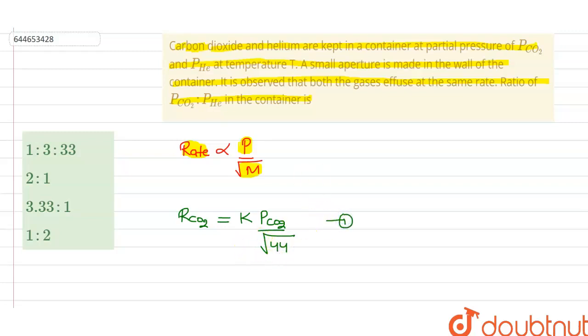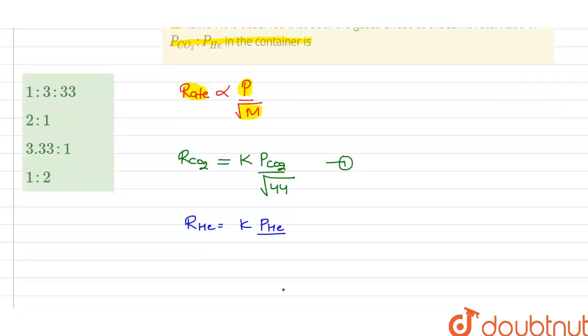This is the first equation. If we write the rate of effusion for helium, it will be K times pressure of helium divided by the molar mass of helium, which is 4, so it will be root 4. This is the second equation.